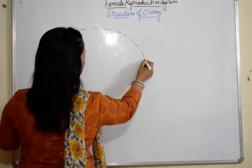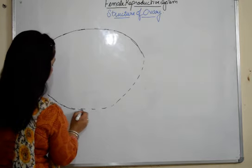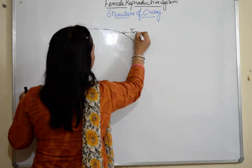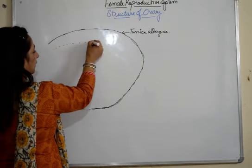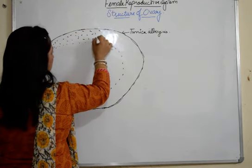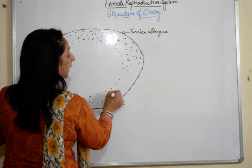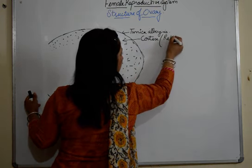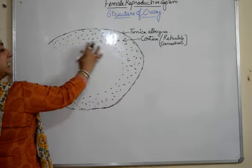If we see the structure of the ovary, it has an outer layer known as tunica albuginea. Inside it there is the cortex region of the ovary, which is made up of reticular connective tissues.